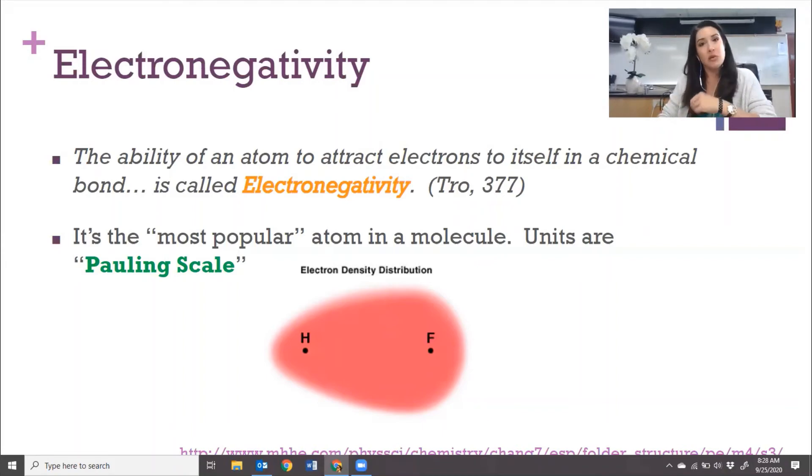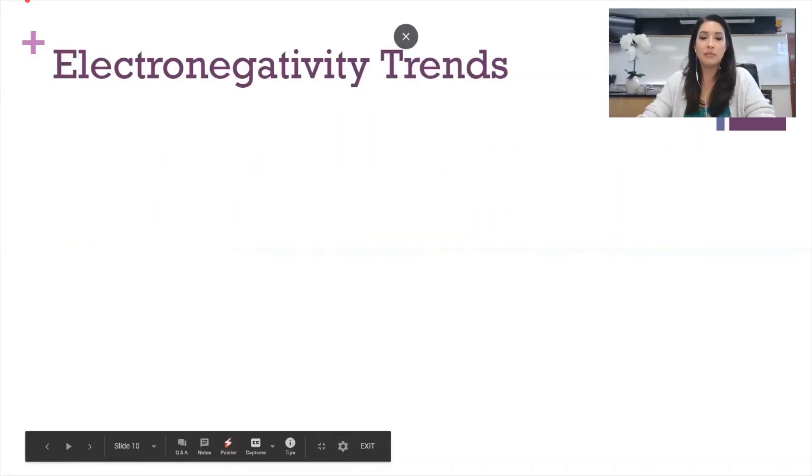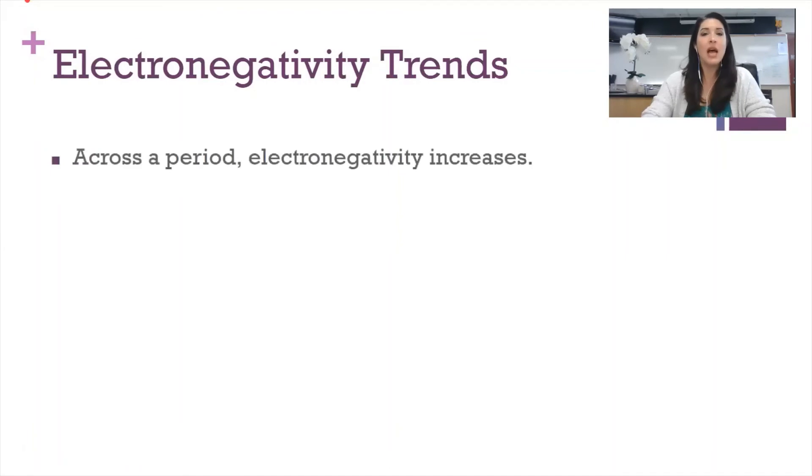The units that we use to measure electronegativity are something we call the Pauling scale. But there are trends that emerge across a period and down a group on the periodic table. As you move across a period, in general, electronegativity increases. As those radii get larger and larger and larger, they tend to attract electrons to themselves in a bond a little bit better than the elements on the left-hand side of the periodic table.